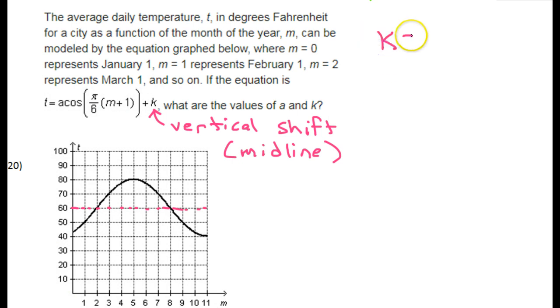Let me just write that down, so K is 60. Okay, now we need the A value. Well, the A value tells you the amplitude.